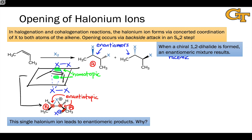And retention of configuration at the carbon on the left. While substitution of X-minus at carbon B leads to product B, with an inversion of configuration at carbon B, because that's where addition occurred.